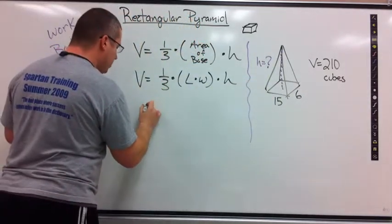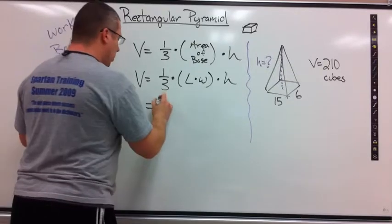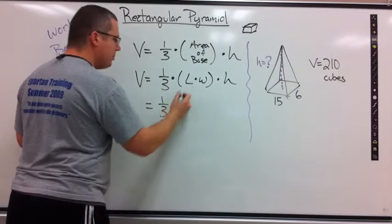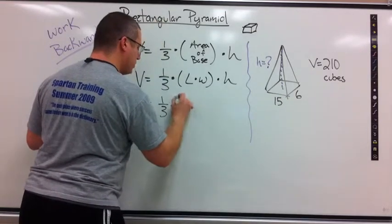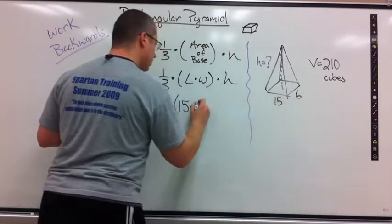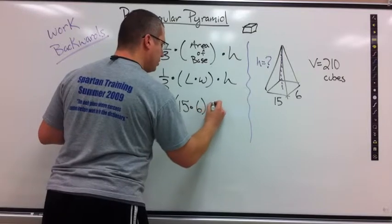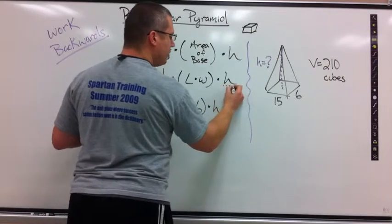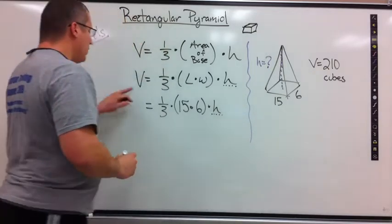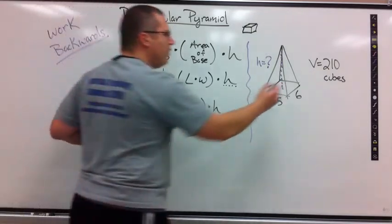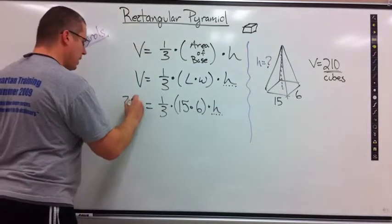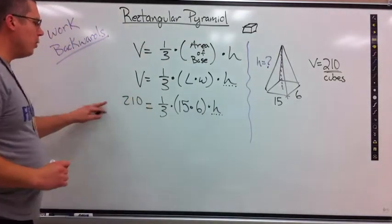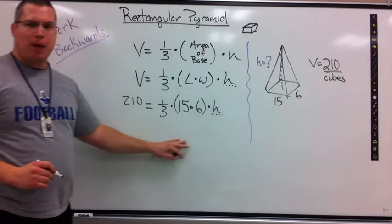I'm going to take my formula, substitute in things I know. 1/3 times the length, longer piece would be 15 times 6 times, I don't know what h is, so I'm going to leave it as a variable. I do know what v is. V equals the number 210. So I can substitute that in right now.